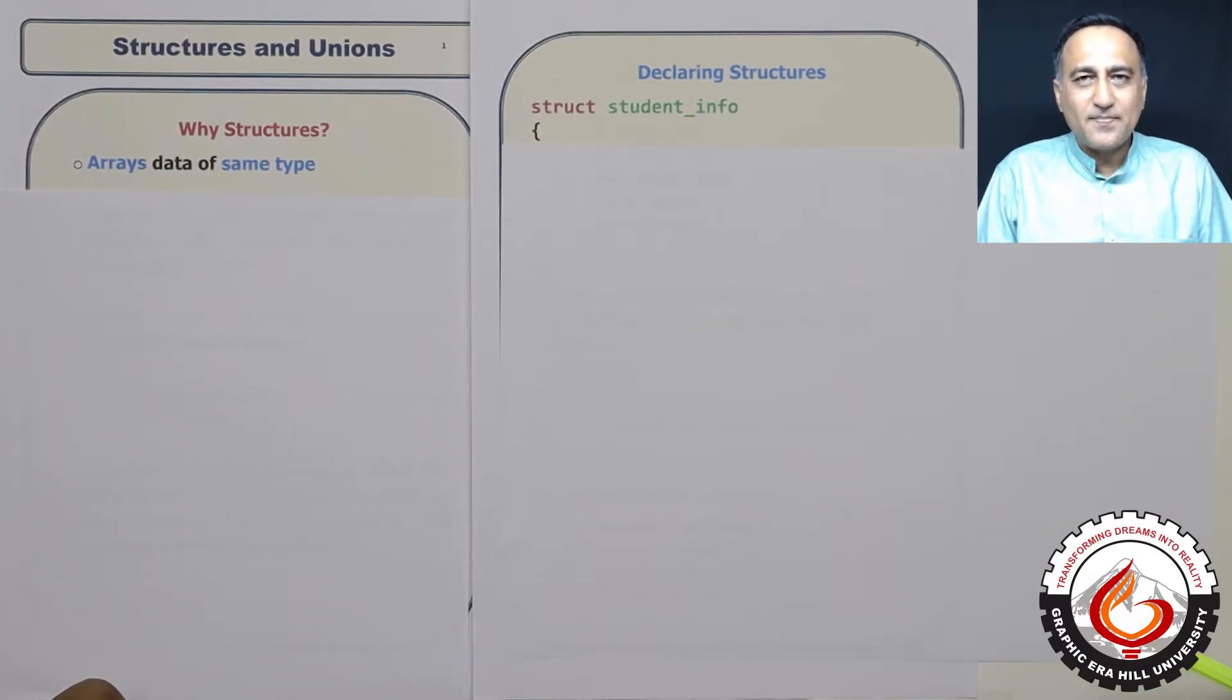Now let us say you want to store a student's name, address, age, role number, gender. Now you're in a problem because if you have to use arrays for this, you will be required to create five or six arrays to store the data.